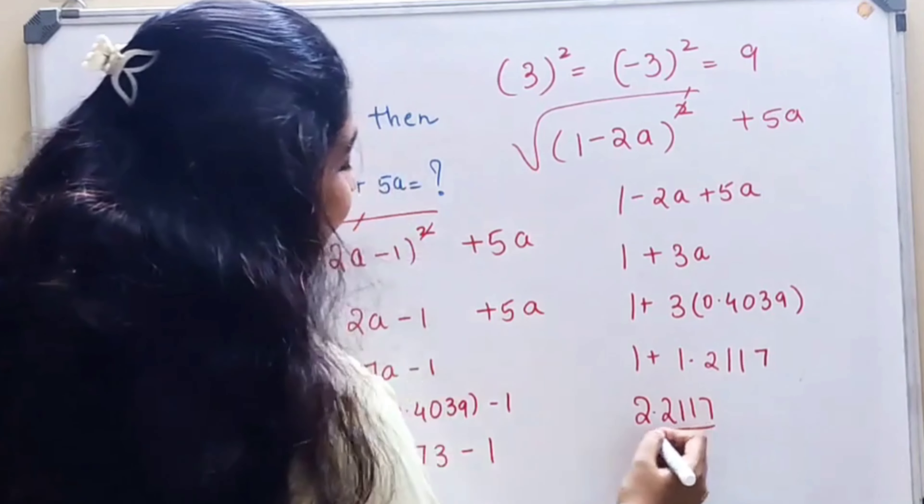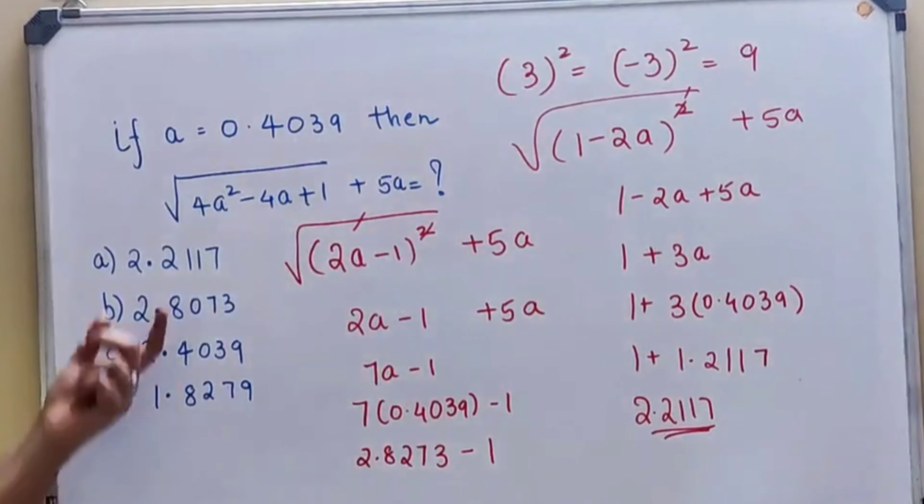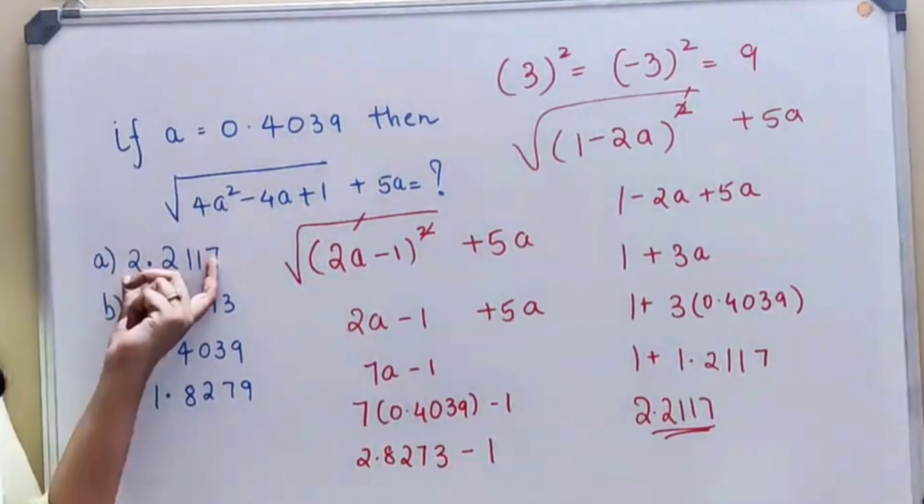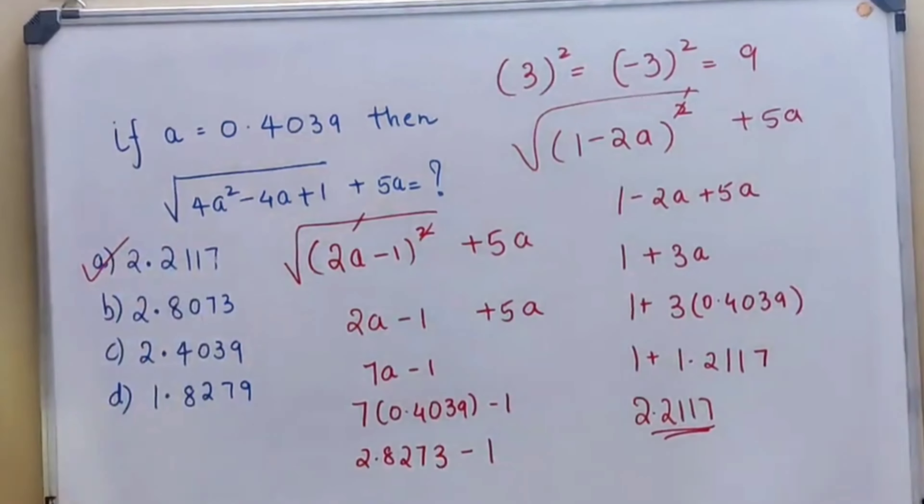So 1 + 1.2117, that gets you 2.2117 and that is your answer. This is available in your options, so option A is your answer.